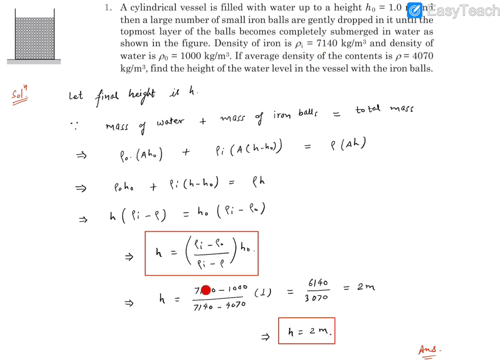ρᵢ is 7140, ρ₀ is 1000, and ρ (average density) is 4070. H0 was 1 meter. Multiplying together, it turns out to be 2 meters. That means the final height is 2 meters. That's our numerical answer, and this is the expression of the answer.